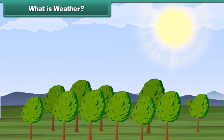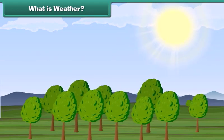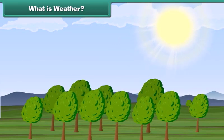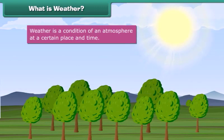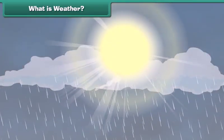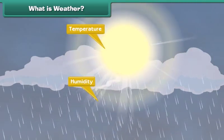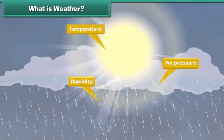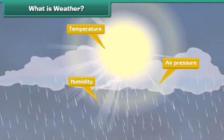Did you check today's weather forecast? What is this weather? Weather is a condition of an atmosphere at a certain place and time. The weather depends on many factors such as temperature, humidity and air pressure. Come, let us learn about these factors.